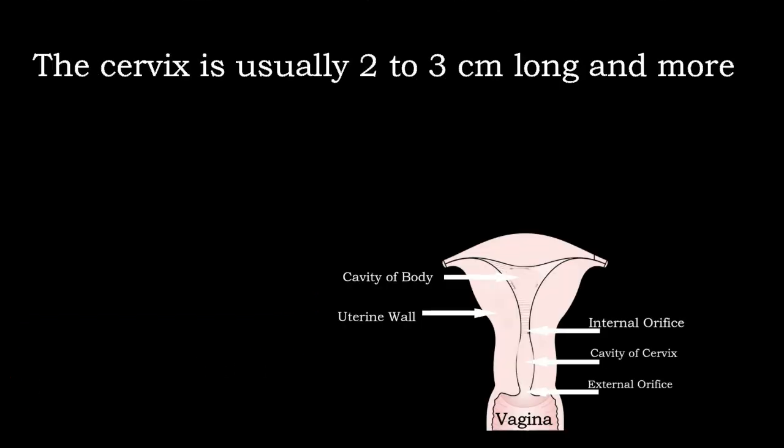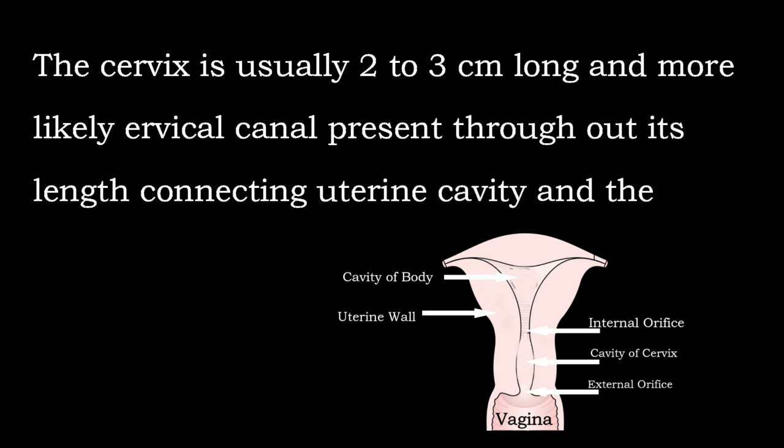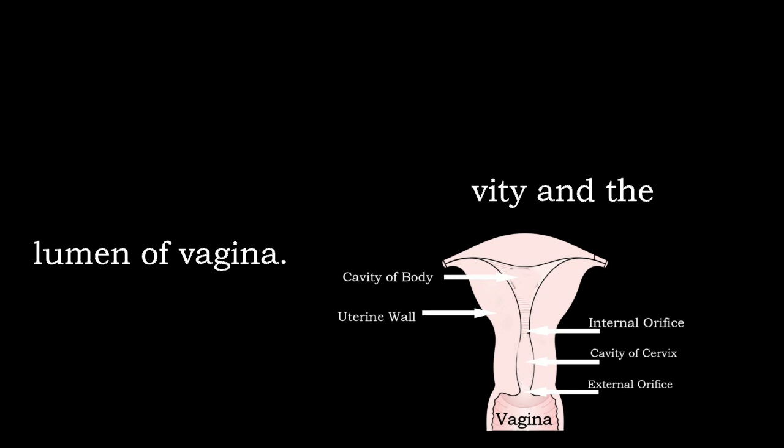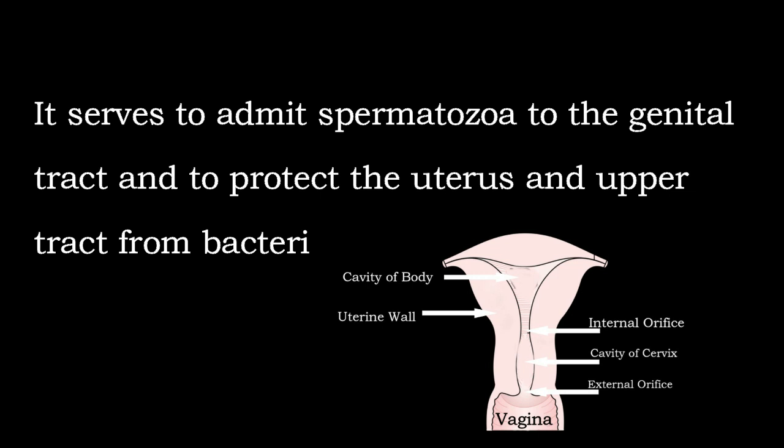We are going to discuss the cervix, its inflammations and other benign lesions. Before going into detail, briefly about its anatomy and histological features: the cervix is usually 2-3 cm long, cylindrical in shape, which changes during pregnancy. There is a central narrow cervical canal connecting the uterine cavity with the lumen of the vagina. This serves to admit spermatozoa to the genital tract and to protect the uterus and upper tract from bacterial infection.